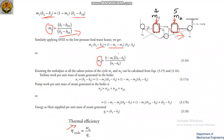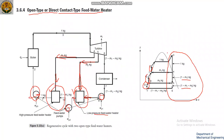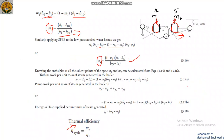The turbine work Wt is: Wt equals (H3 minus H4) plus (H4 minus H5) into (1 minus M1) plus (H5 minus H6) into (1 minus M1 minus M2).